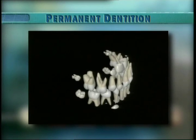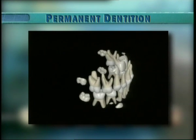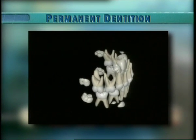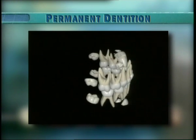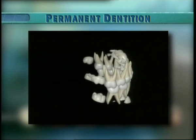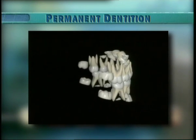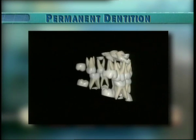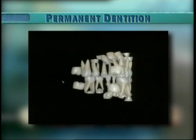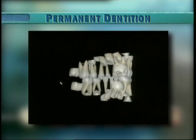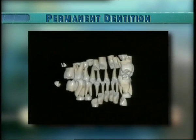That is not the case for the permanent incisors, which maintain their overlapping position until eruption starts. However, the space in which the overlapping crowns initially were located is sufficiently large to allow a harmonious arrangement of the much smaller roots after eruption is completed.